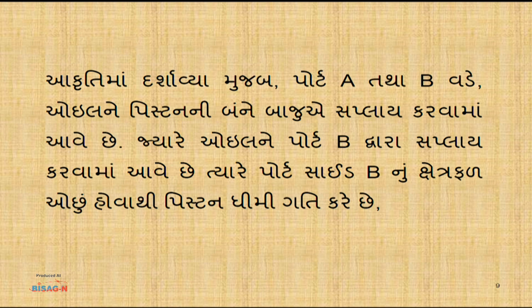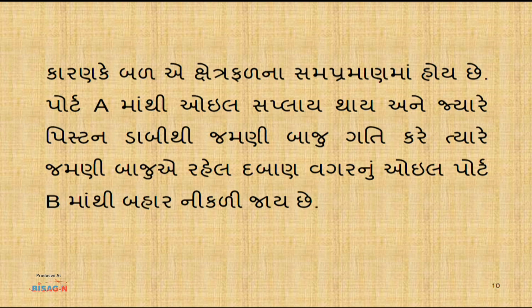ડબલ એક્ટિંગ સિલિન્ડરમાં પોર્ટ A તથા B વડે ઓઈલને પિસ્ટનની બંને બાજુએ સપ્લાય કરવામાં આવે છે. જ્યારે ઓઈલને પોર્ટ B દ્વારા સપ્લાય કરવામાં આવે ત્યારે પોર્ટ B સાઈડ B નું ક્ષેત્રફળ ઓછું હોવાથી પિસ્ટન ધીમી ગતિ કરે છે, કારણ કે બળ ક્ષેત્રફળના સમપ્રમાણમાં હોય છે. ત્યારે જમણી બાજુ રહેલ દબાણ વગરનું ઓઈલ પોર્ટ B માંથી બહાર નીકળી જાય છે.